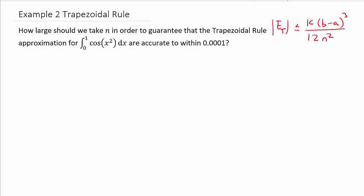Alright, so let's look at example two. How large do we need to take n in order to guarantee that the trapezoidal rule approximation for cosine x squared from zero to one is accurate to within 0.0001? We've got to figure out what k is — k is usually the most difficult part of the problem, and sometimes it's a little more difficult to get.